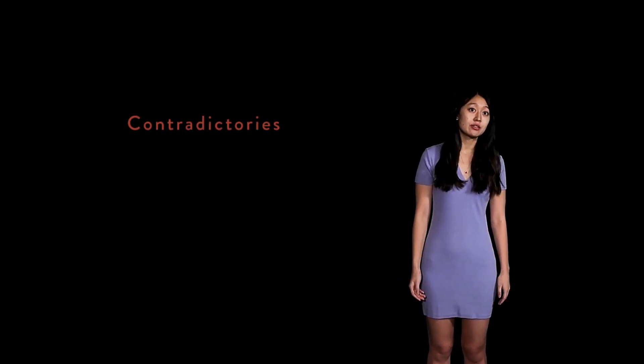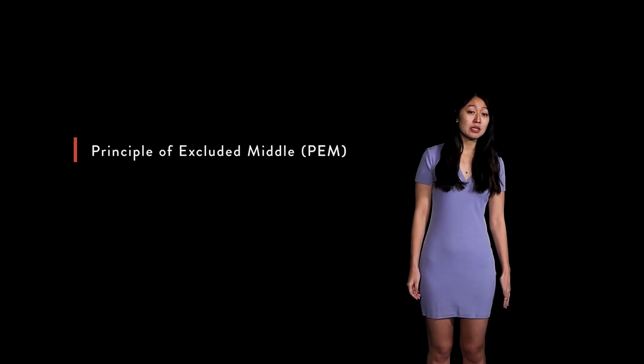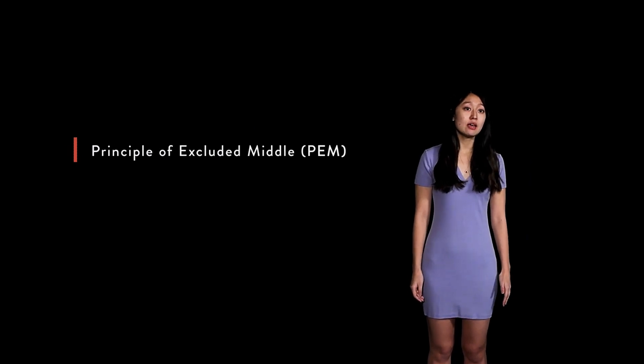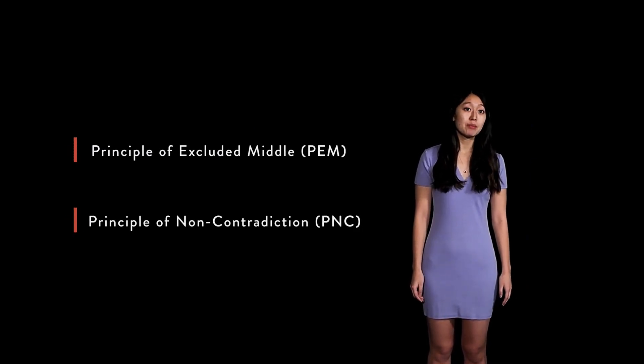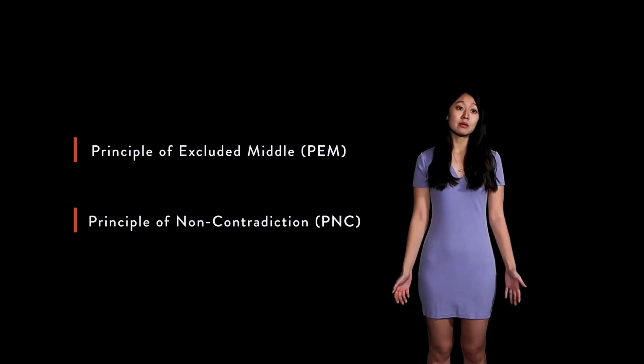Previously, we discussed a particular kind of sentence pair: contradictories. There are two interesting basic principles which characterize certain relations between such sentences — the principle of excluded middle, PEM for short, and the principle of non-contradiction, PNC for short. We have already talked about the latter; let's turn to the former.